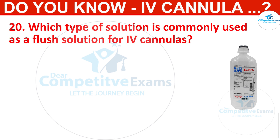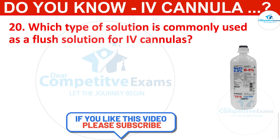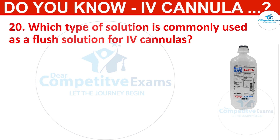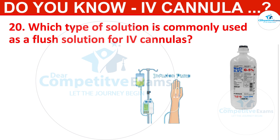Q20. Which type of solution is commonly used as a flush solution for IV cannulas? Options: normal saline, dextrose 5%, lactated Ringer's. The correct answer is normal saline. Normal saline is the preferred solution for flushing IV cannulas due to its compatibility with blood.